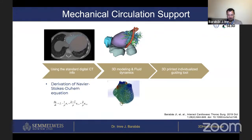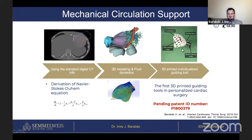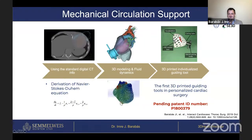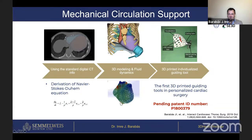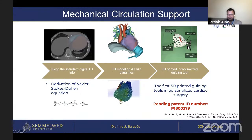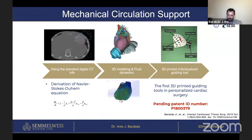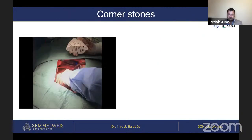We also create a guiding tube for the coring knife. Here we can see the exoskeleton — this is the first model — and it perfectly fits on the surface of the heart. Here is the apical coring knife and here is the guiding tube for the coring knife. This is a pending patent and we have also published it, so if you are interested you can read more about it.